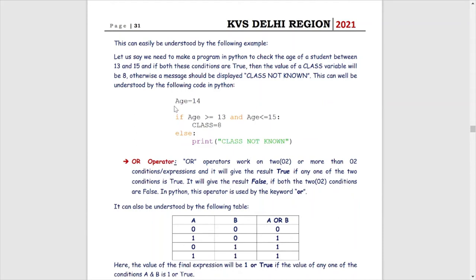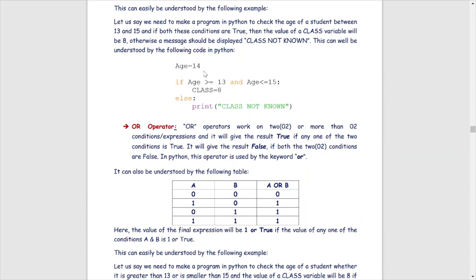We can understand this with a small Python code. Here we use variable age equals 14. The condition is: if age equals 13 (assume A) and age less than or equal to 15 (assume B), then the variable class gets the value 8; else print 'class not known'. To get the value of class as 8, both conditions must be simultaneously true. If any one condition is false, the whole condition becomes false and we go into the else part and print 'class not known'.